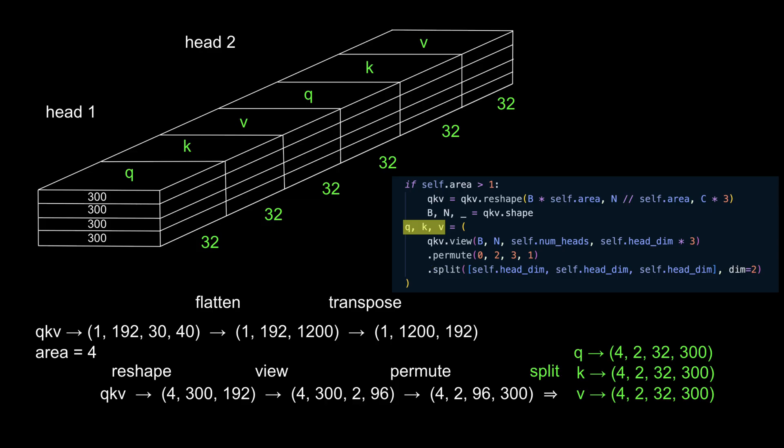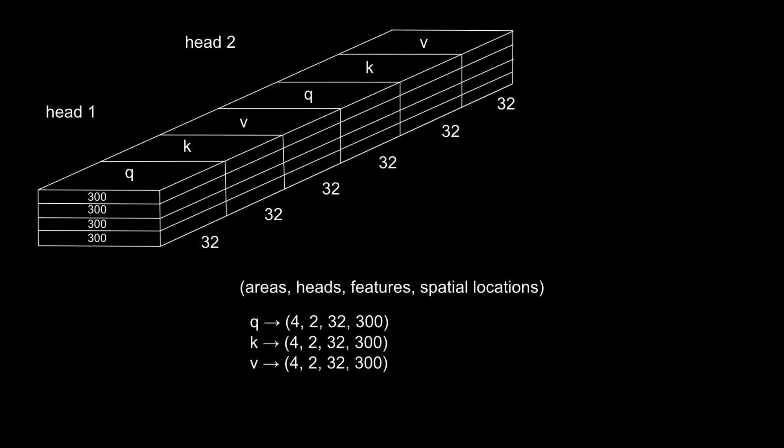This is where it connects back to what we said earlier about each of the six zones serving a specific purpose. Notice that the Q, K, and V tensors all share the same dimensions. Each of them holds spatial information corresponding to the four areas and the two attention heads.